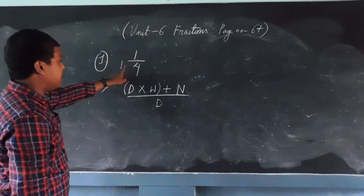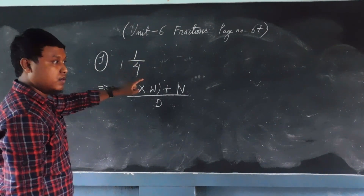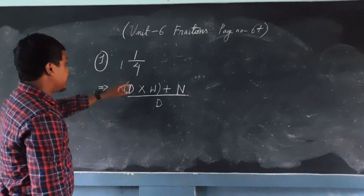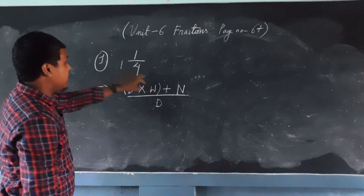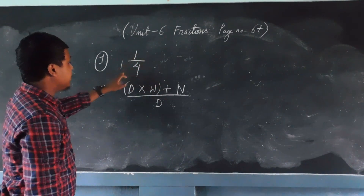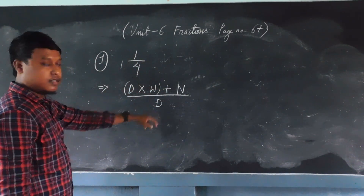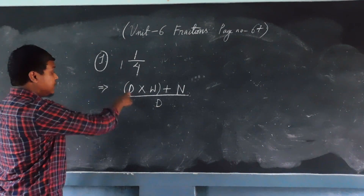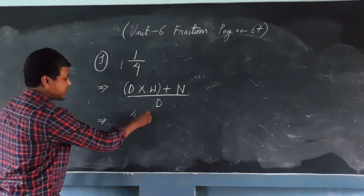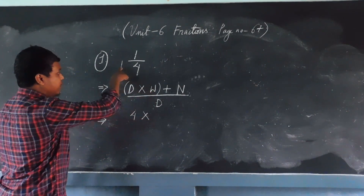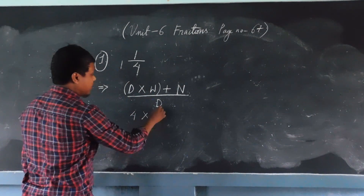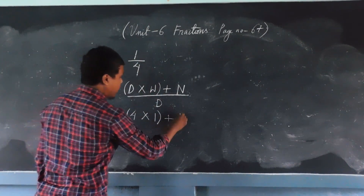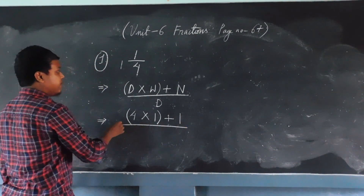Numerator, denominator, and whole number together is known as a mixed number. So we have to separate it now. Denominator into whole number plus numerator, divided by denominator. Now we fill in the values: denominator is 4, whole number is 1, close the bracket, plus numerator which is also 1, divided by 4.